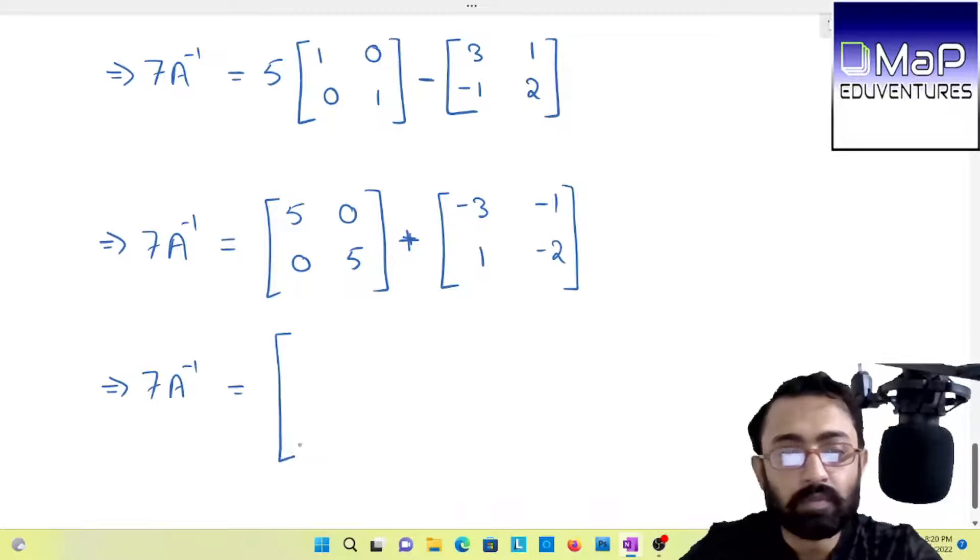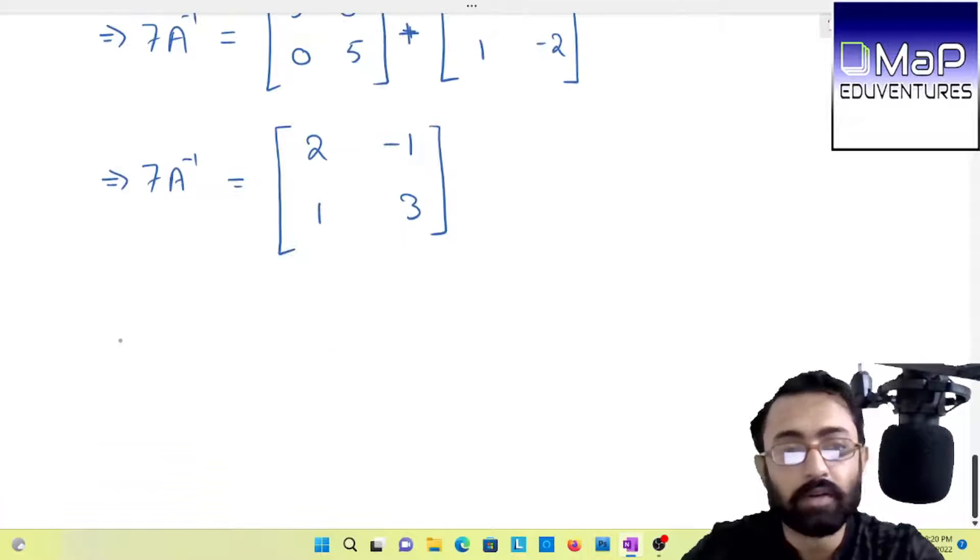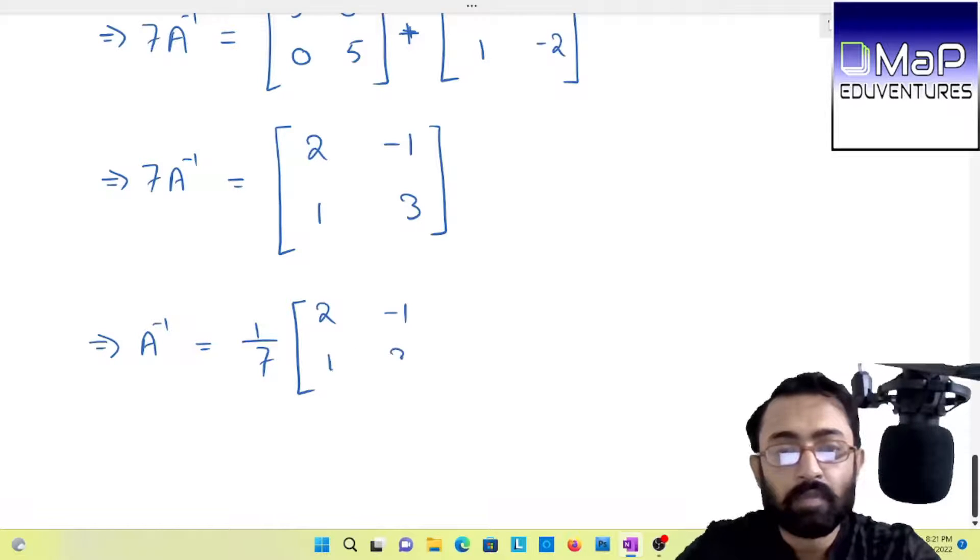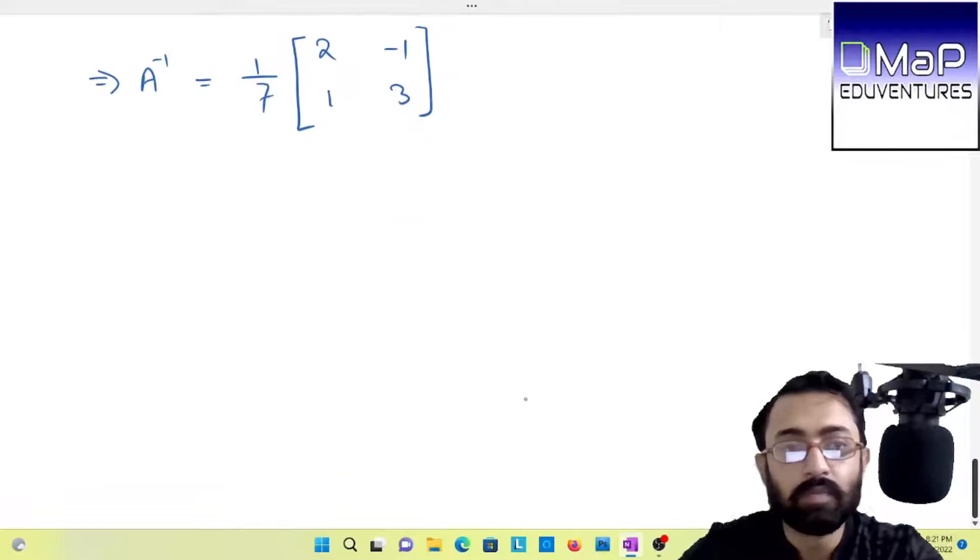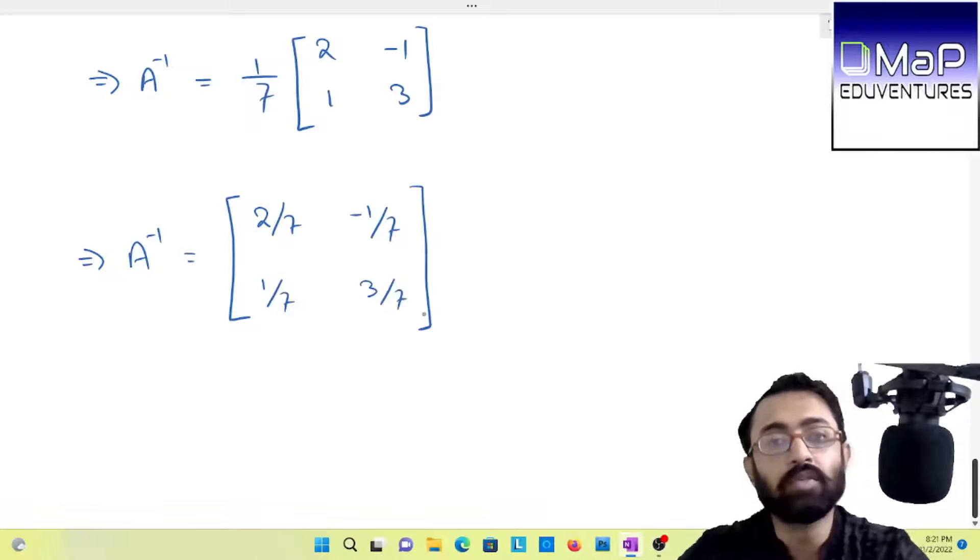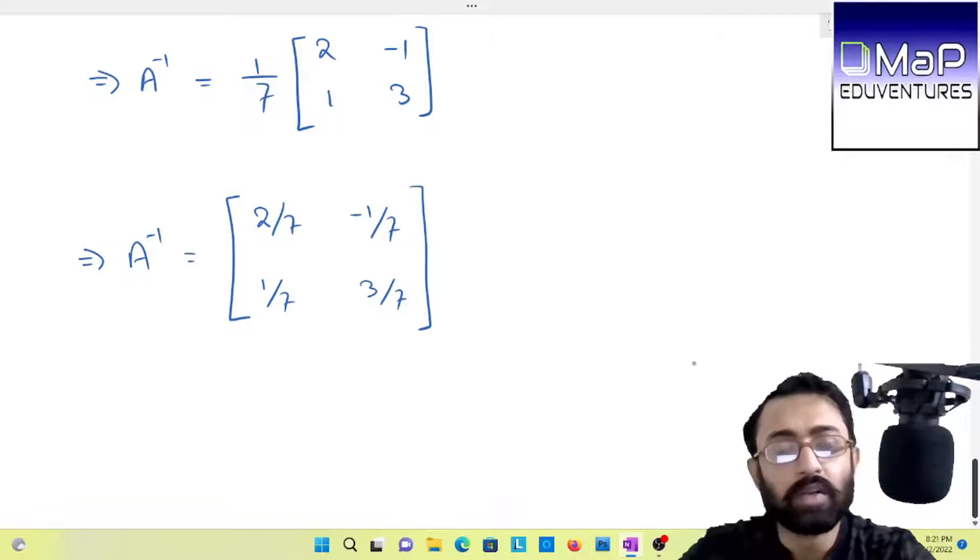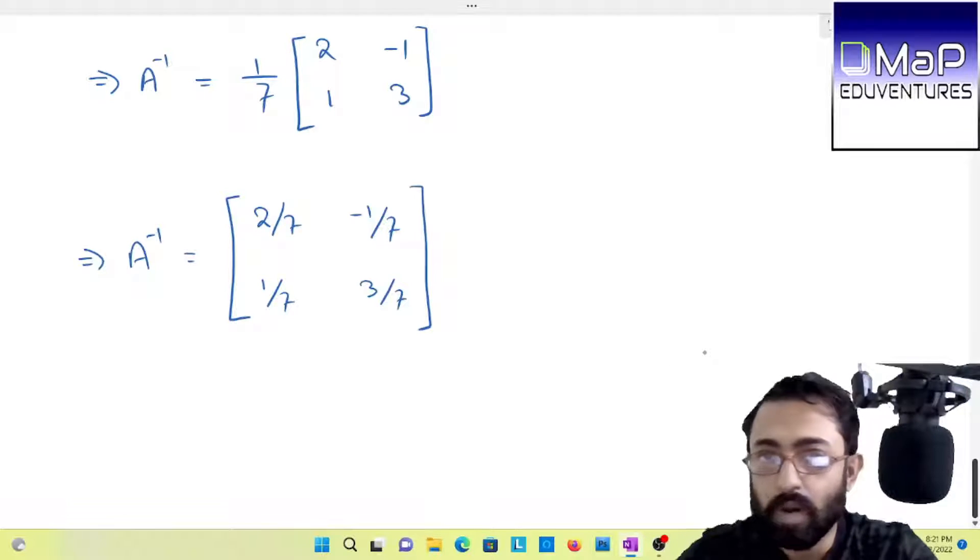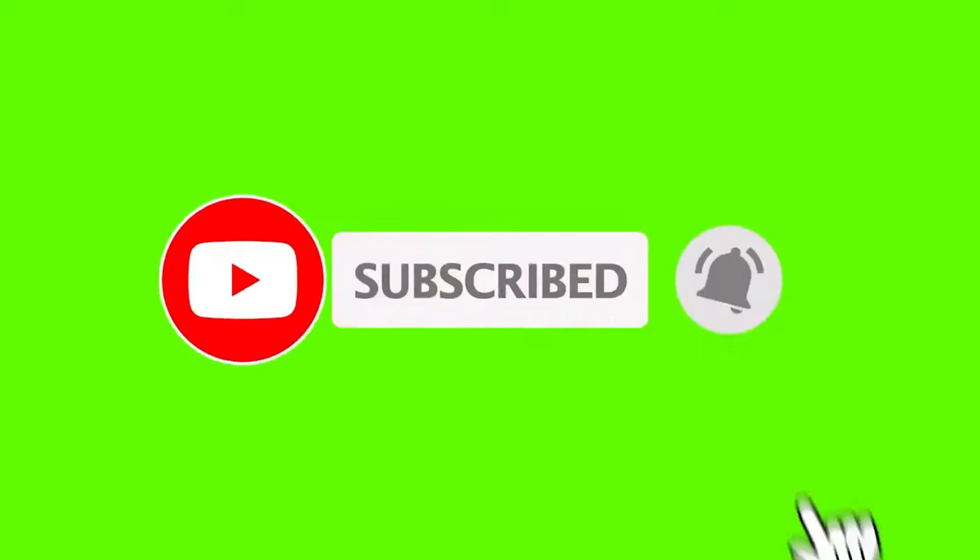Now you can get the inverse matrix. Just divide by 7, it will become 1 by 7 and the final result. This is your final result. 2 cross 2 matrix. This is the last question of the year 2016 for matrices.